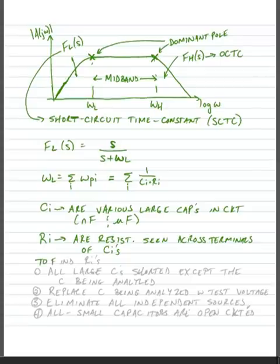So to find the R sub i's, in this case, what we're going to do is all large capacitors are shorted, except the one we're analyzing.